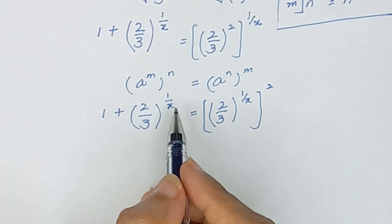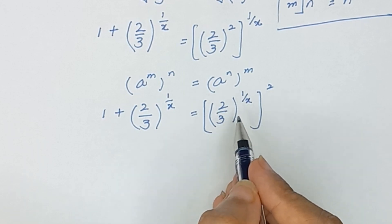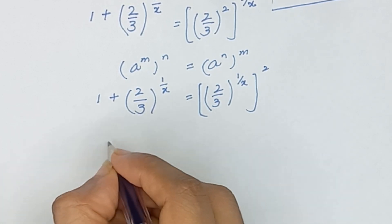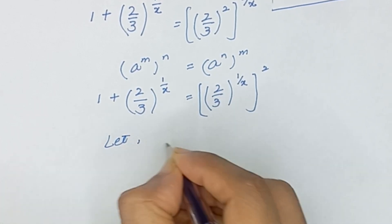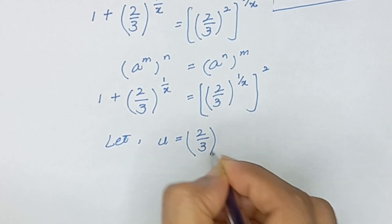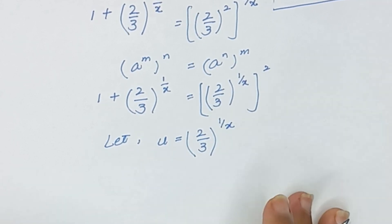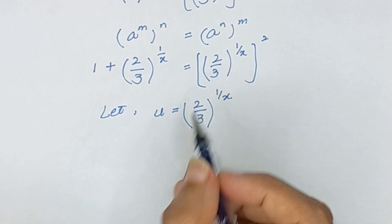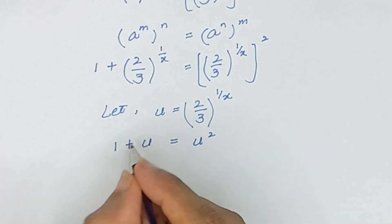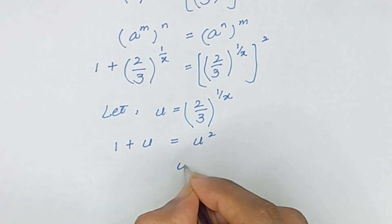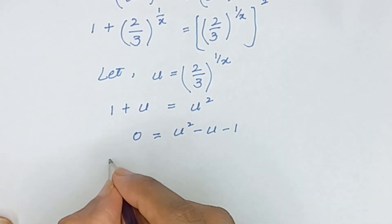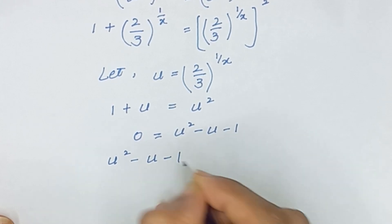Here we have (2/3) to the power (1/x) appearing in both terms. So I will make a substitution: let u equal (2/3) to the power (1/x). Our equation will become 1 plus u is equal to u squared. Taking 1 plus u to the right-hand side, it will become u squared minus u minus 1 is equal to 0.